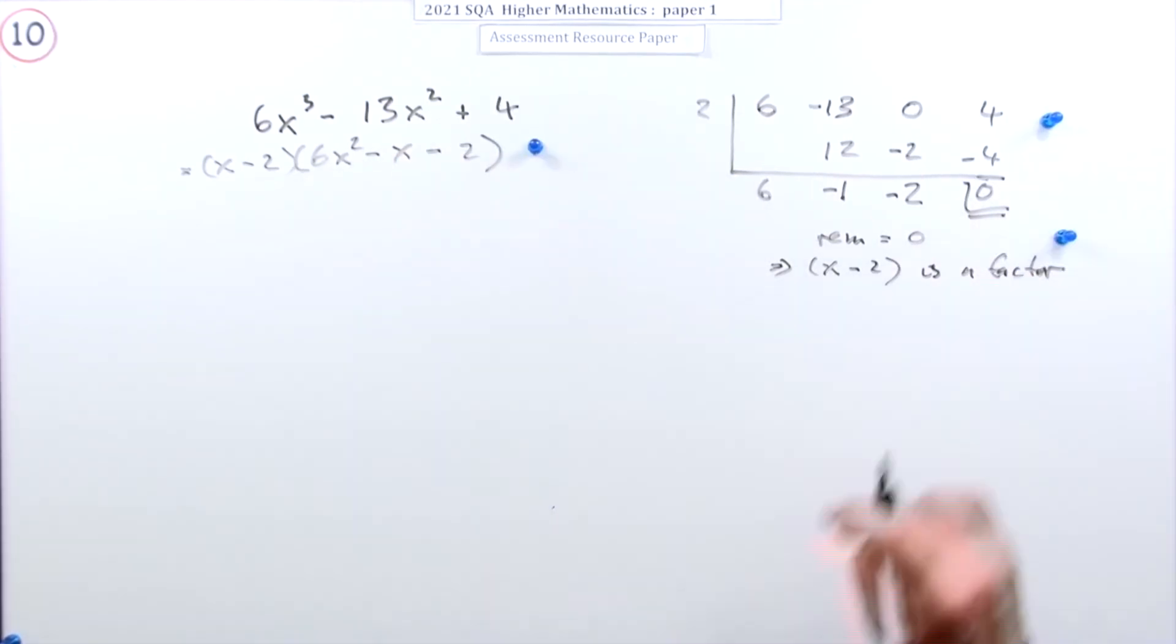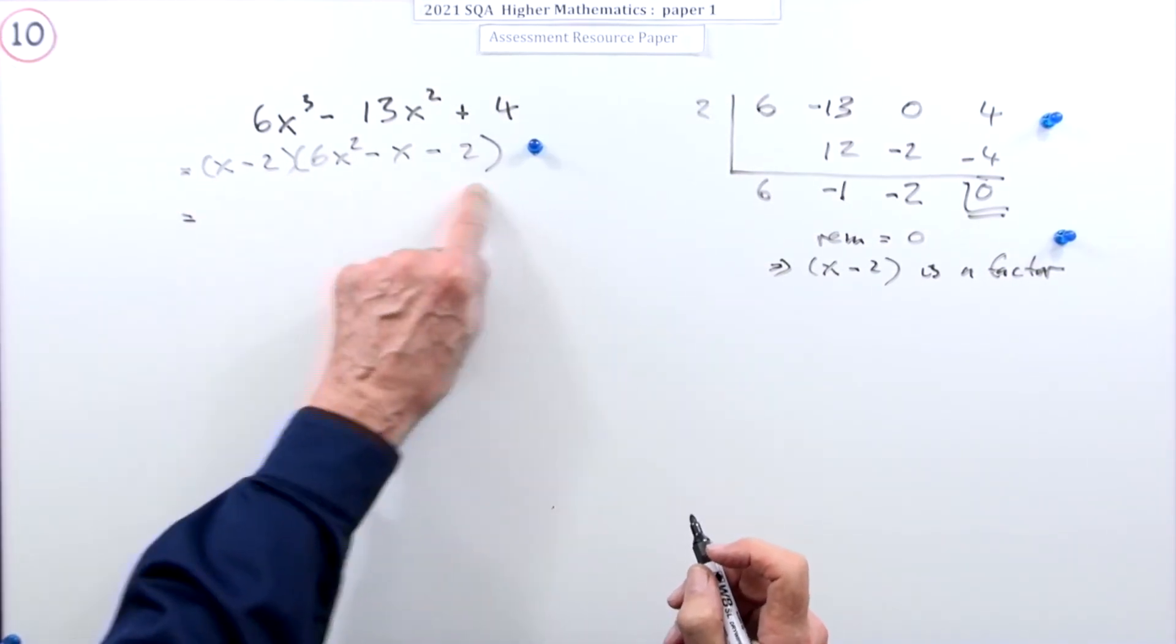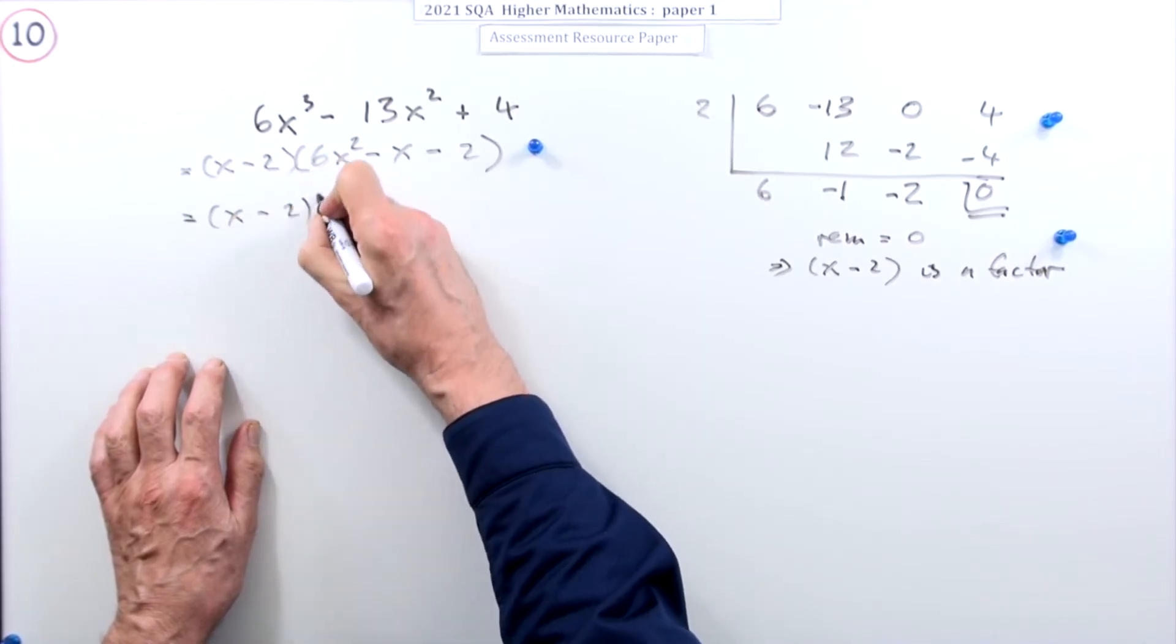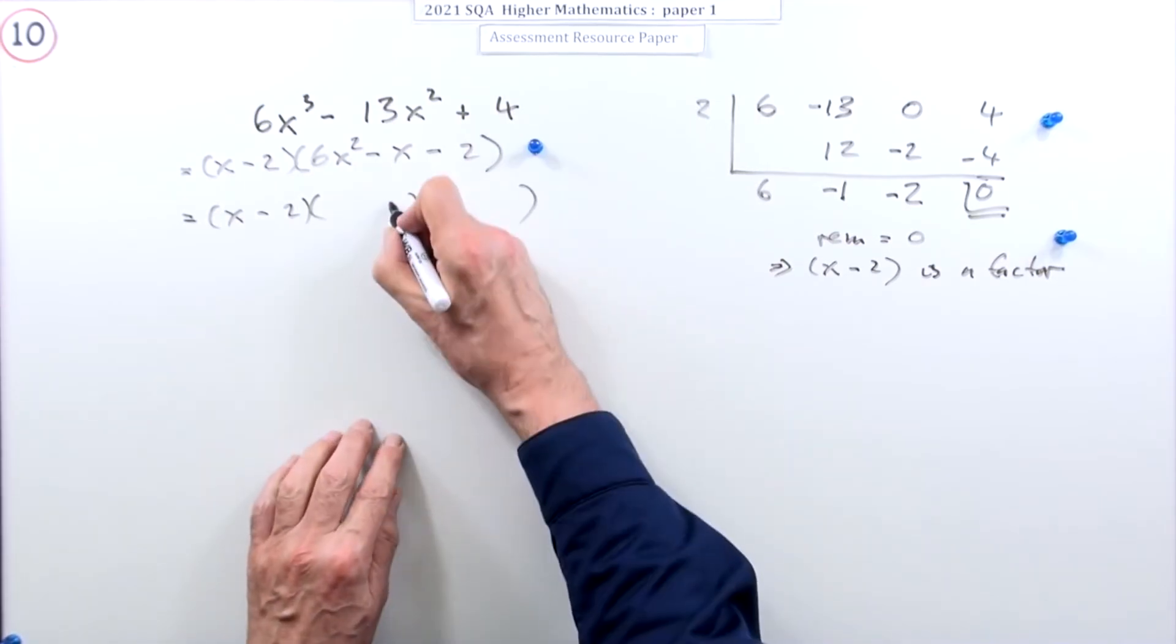There's a mark just for interpreting that. So these three marks have just come from using this table, and the last mark is to factorize that yourself.